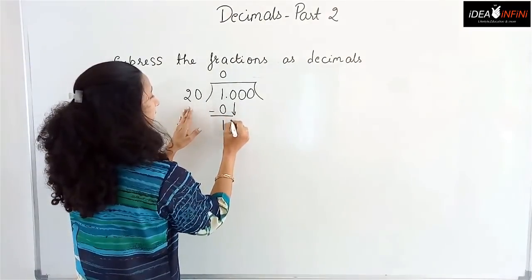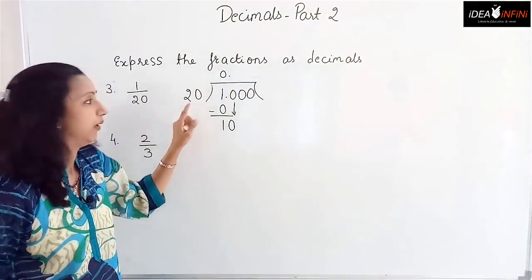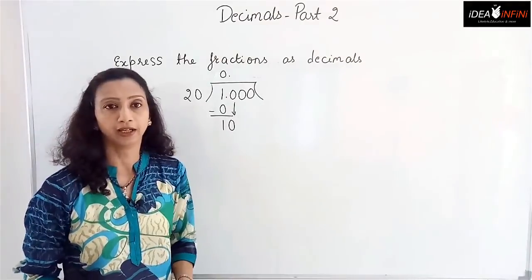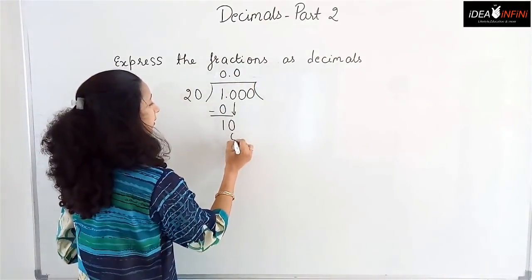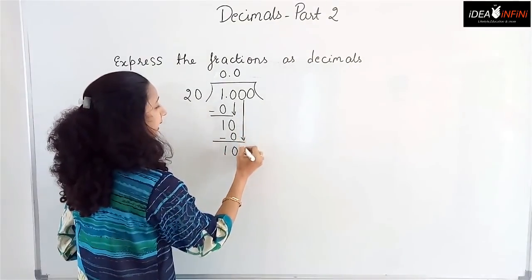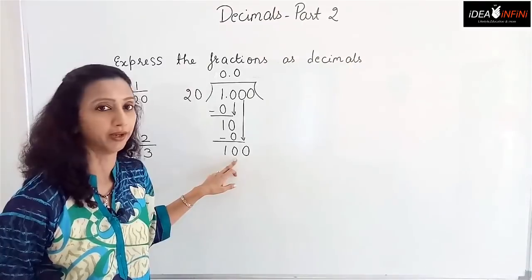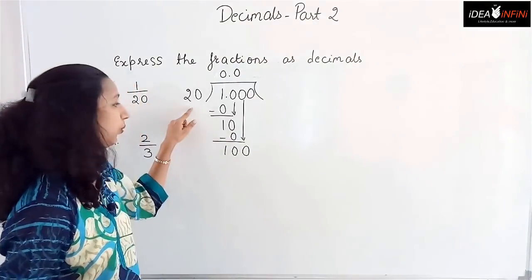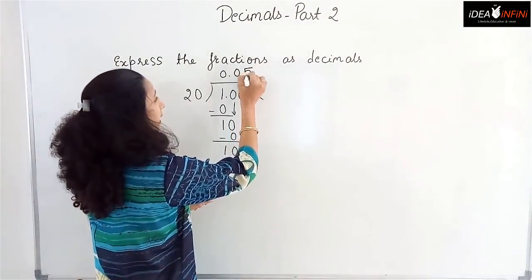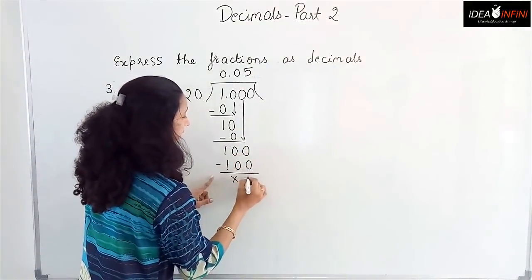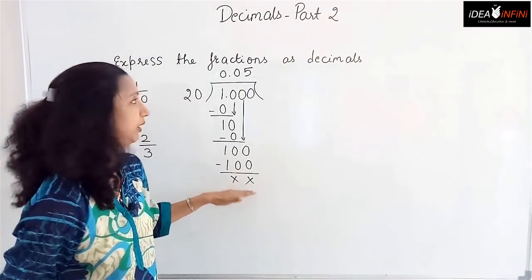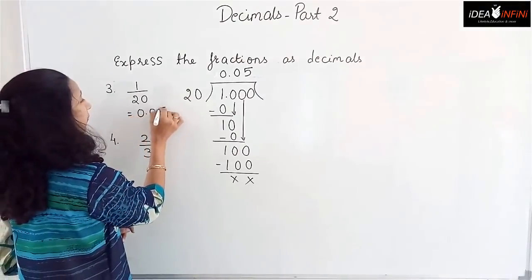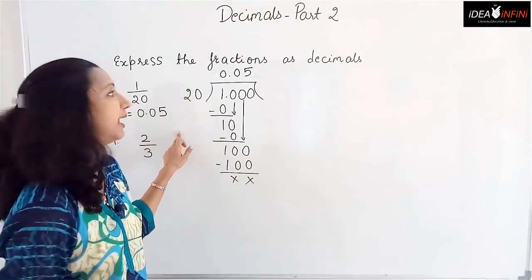Bring down another zero to get 100. 20 fives are 100, so the quotient digit is 5, remainder 0. When the remainder is 0, the decimal is complete. So 1 by 20 equals 0.05.